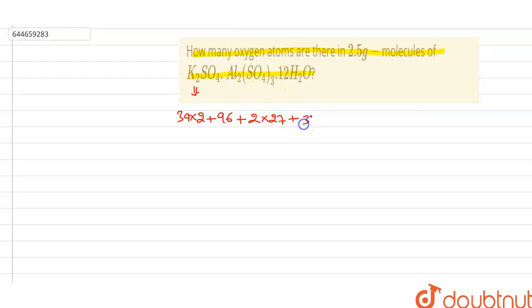We are having SO4 twice, so it will be 3 multiplied by 96. And here we know that the molar mass of water is 18, so it will be 12 multiplied by 18.